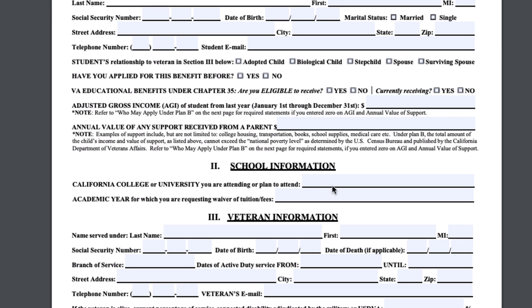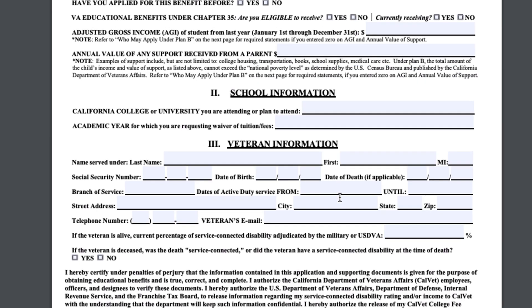For the school information, put in which school they're going to — whether it's a California community college, University of California, or California State University; those are the only schools that qualify. Also enter the academic year, for example 2019 to 2020. For the veteran information, fill in your last name, first name, middle initial, social security number, and date of birth — it's pretty self-explanatory.